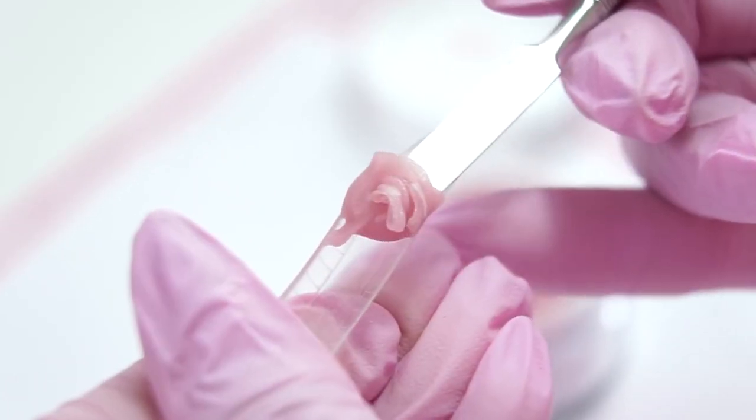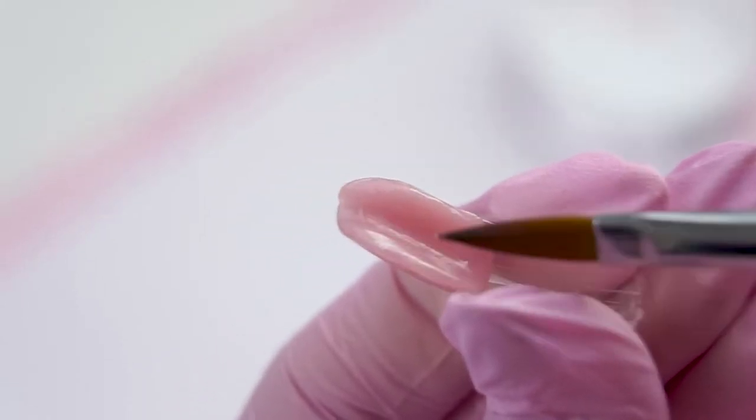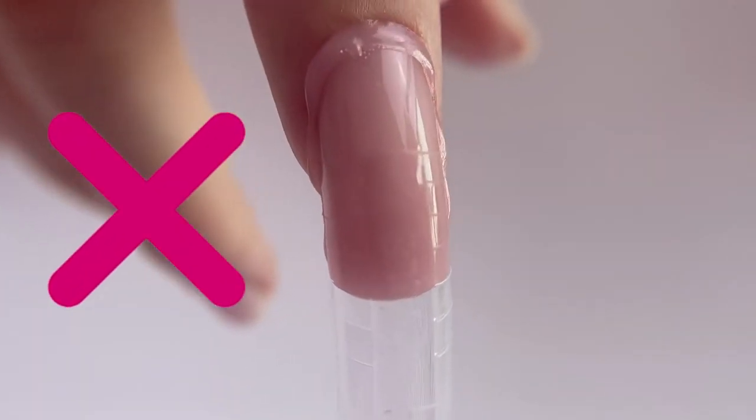If there is too much Acrygel, the material will leak everywhere during the form setup. It's better to remove the excess from the dual form before curing in the lamp.